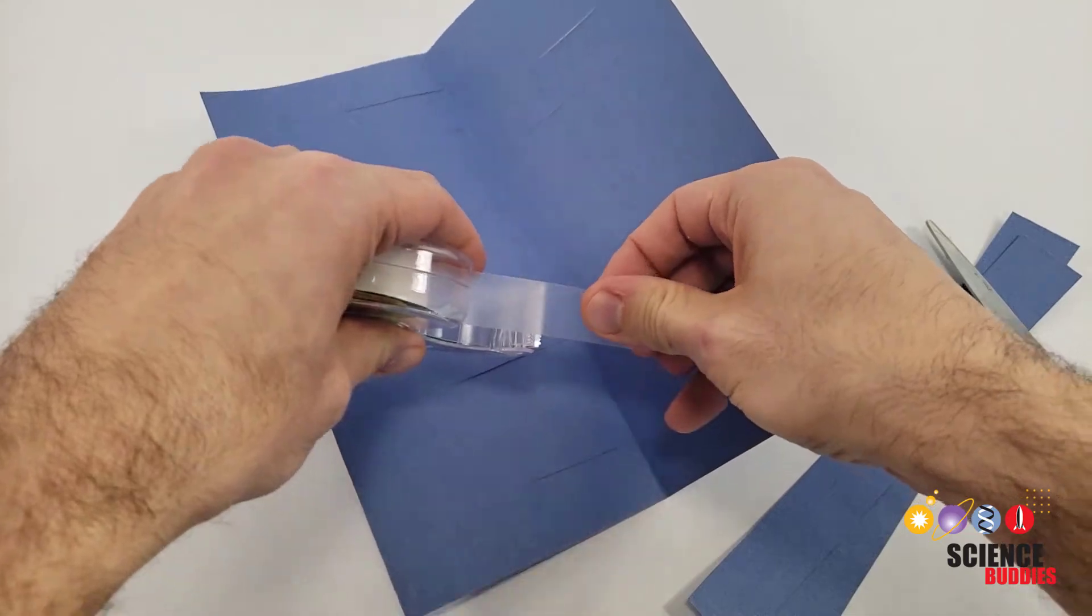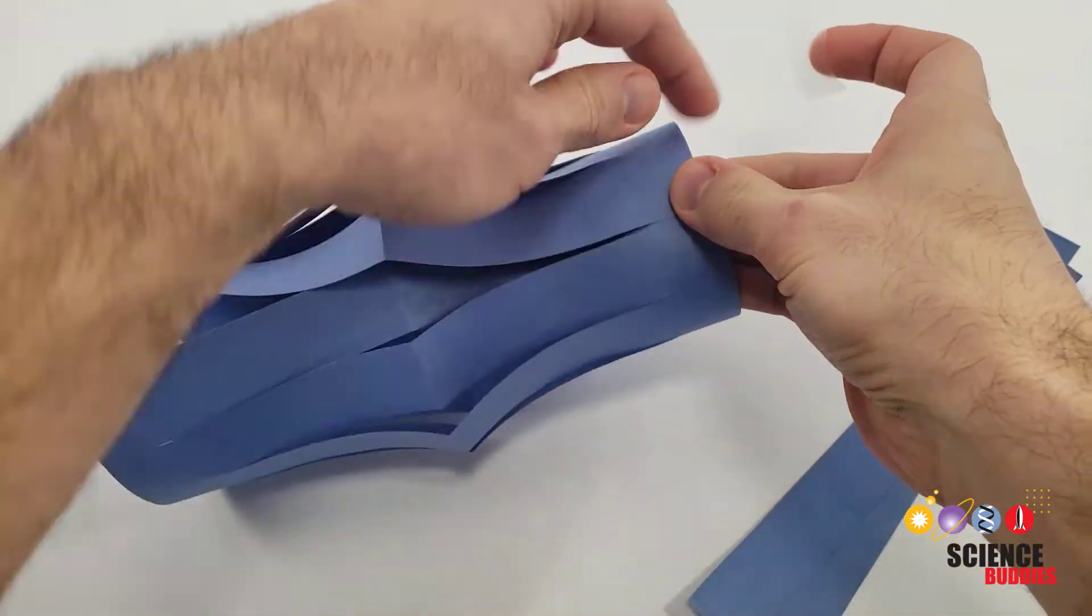Unfold the paper. Roll it into a loop and tape or staple the two ends together.